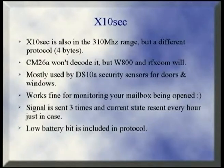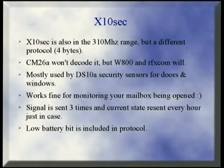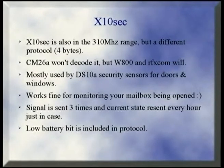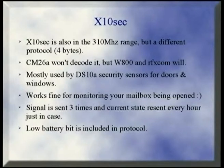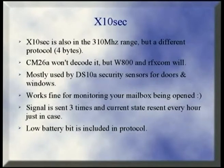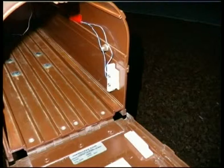ExtendSec is yet another protocol from the same company, but they had to make it incompatible somehow. It's mostly used for those cheap little DS10 sensors, which are on-off sensors you put on windows, doors, garage doors, or mailboxes. I got them for about $3 for a pack of 10 — old technology that no one wants, which means it's great for us to use. The same receiver and antenna receives those signals, so you can put it in MrHouse. That's an example of the mailbox sensor.